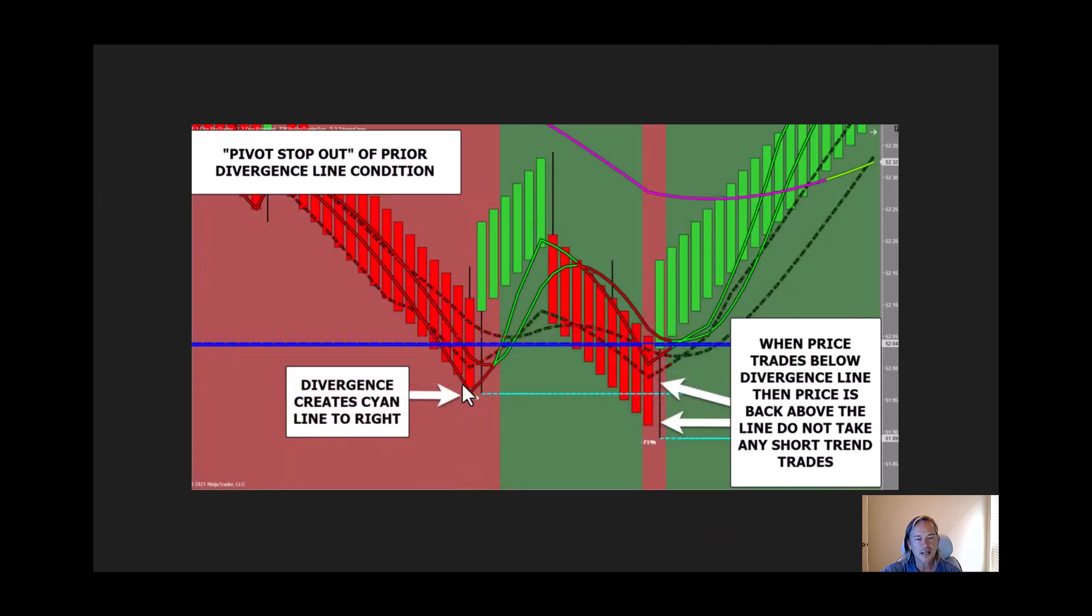But, if price trades down to that divergence low, exceeds it, trades back above, no more short trades into that area. This is a pivot stopout of a prior divergence.